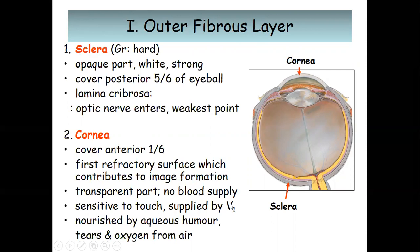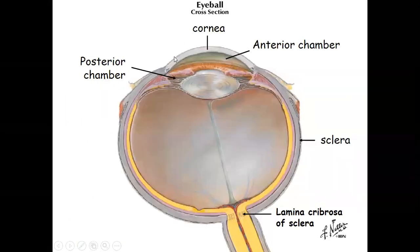The trigeminal nerve is the fifth cranial nerve. The cornea is nourished by the aqueous humor, by tears, and also by oxygen from the air because the cornea is directly exposed to the air. So we have the cornea anteriorly covering one-sixth, the sclera covering five-sixths posteriorly, and the lamina cribrosa as the weakest point where the optic nerve enters.